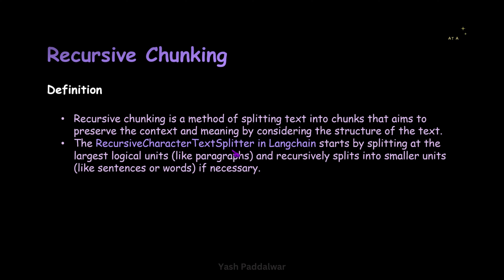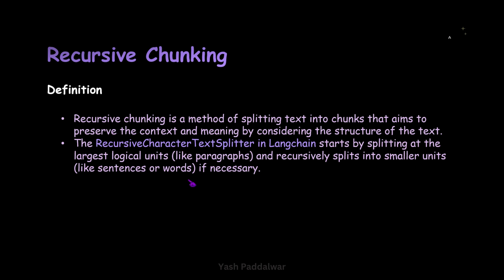In this video we'll be specifically looking into the Recursive Character Text Splitter, which is one of the modules in LangChain. Now how does it work? It starts by splitting at the largest logical units, that is paragraphs. So basically we'll be getting a text as an input — the text can be an entire text file containing multiple paragraphs. It starts by splitting at the largest logical units like paragraphs and then recursively splits into smaller units, for example sentences or words, if necessary.